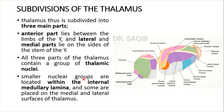All three parts of the thalamus contain a group of thalamic nuclei which we will discuss in the next lecture. Smaller nuclear groups are located within the internal medullary lamina, and some are placed on the medial and lateral surfaces of the thalamus.